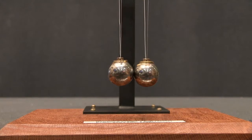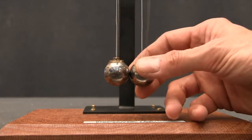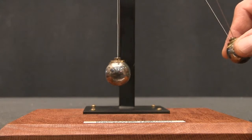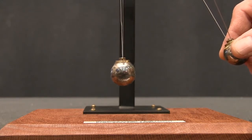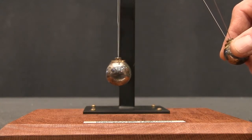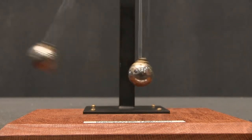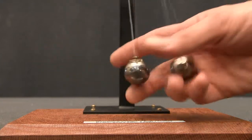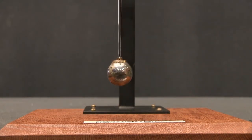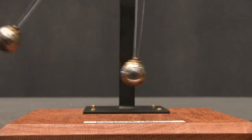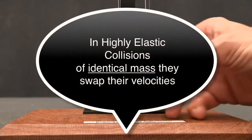So we have two conditions to be fulfilled: conservation of momentum and conservation of energy. Now because these have identical mass, in order to fulfill those two conditions something special happens. One ball is initially stationary and the other is moving. You'll notice that the ball that is initially moving becomes stationary, and the ball that was initially stationary moves off — they swap their velocities.